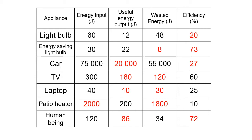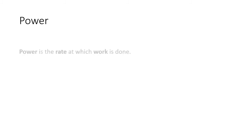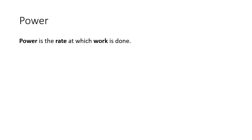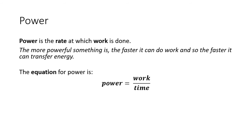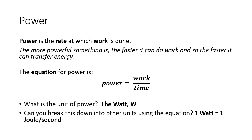Now we are going to learn about power. Power is the rate at which work is done — how fast something is being done. The more powerful something is, the faster it can do work and transfer energy. Mathematically, the equation for power is work divided by time, and the unit for power is watts, or joules per second. One watt equals one joule per second.